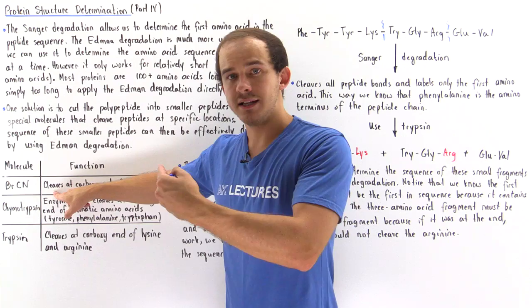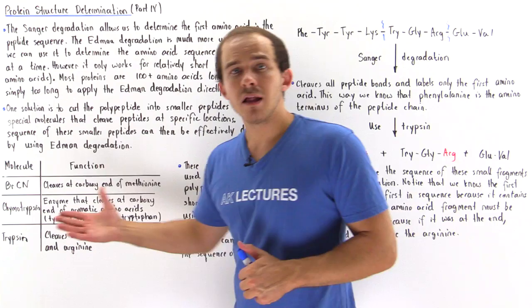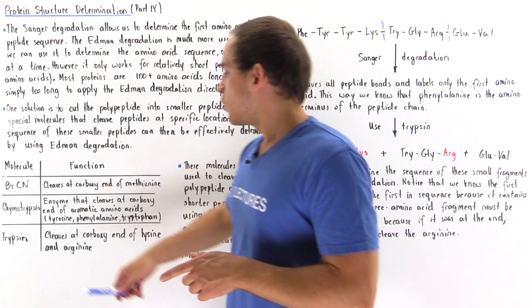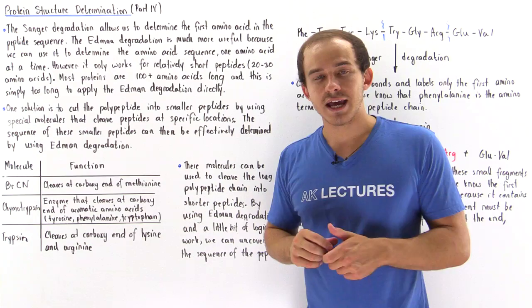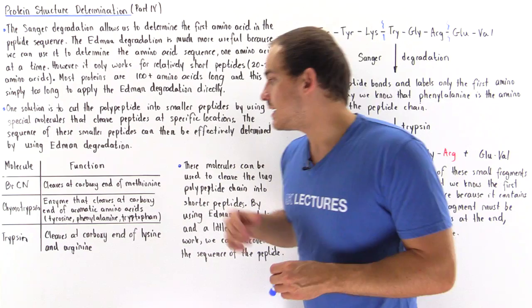The next two molecules are biological enzymes used inside our body: chymotrypsin and trypsin. Chymotrypsin is an enzyme that cleaves at the carboxy end of amino acids that contain aromatic side chains, which includes tryptophan, phenylalanine, and tyrosine.